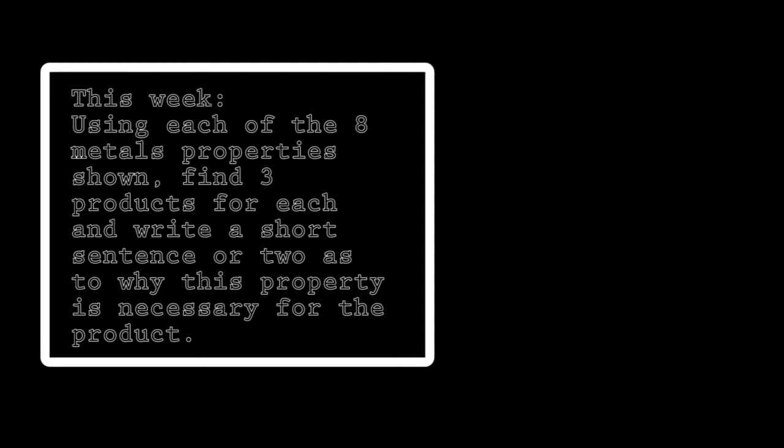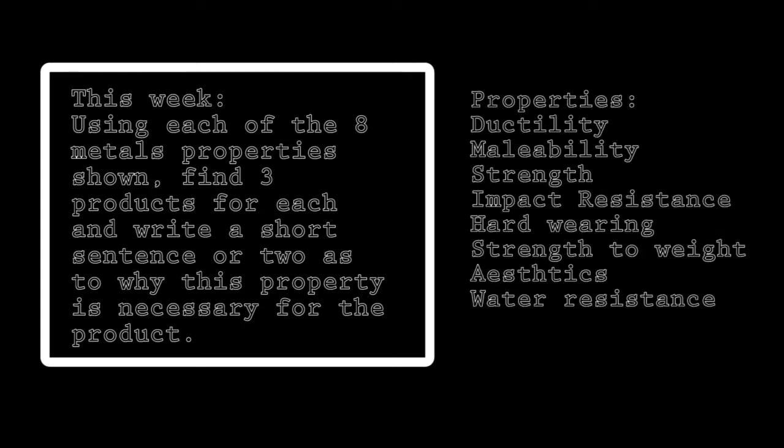So for example, you might choose a frame of a goal, say for seven-a-side football. The frame of the goal you might discover to be made from aluminium. Aluminium, why is that suitable? Well, it doesn't rust and it's going to be kept outside for a long time. We know it doesn't rust because it's non-ferrous.